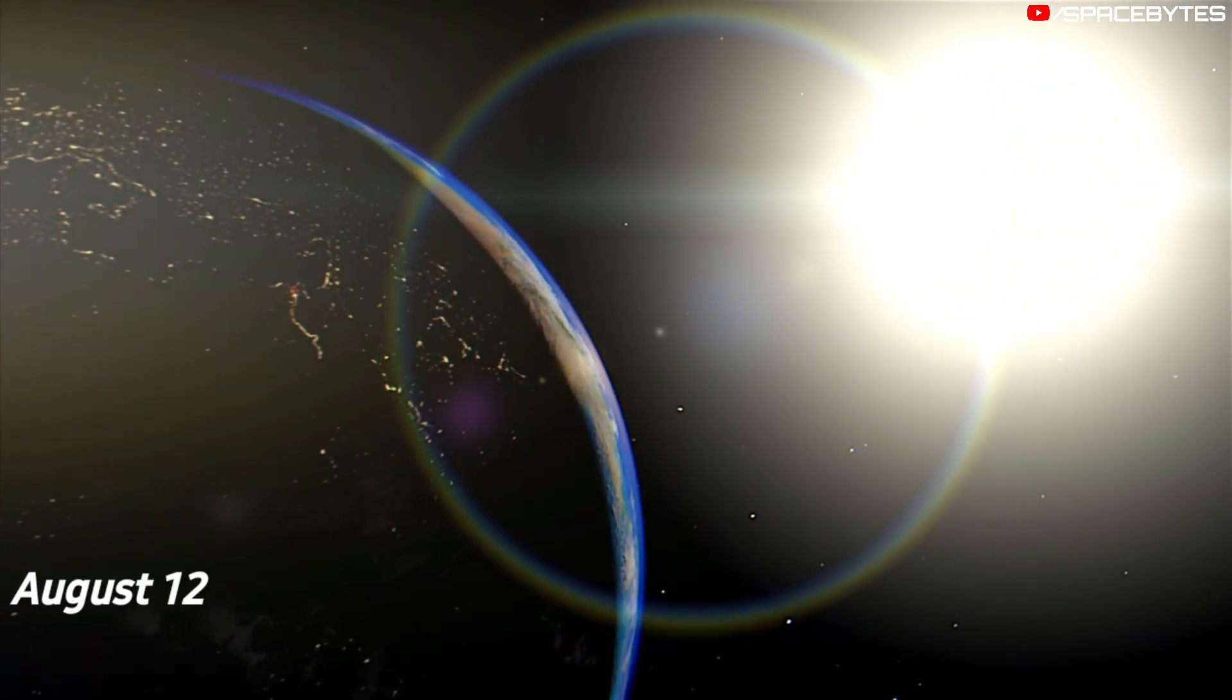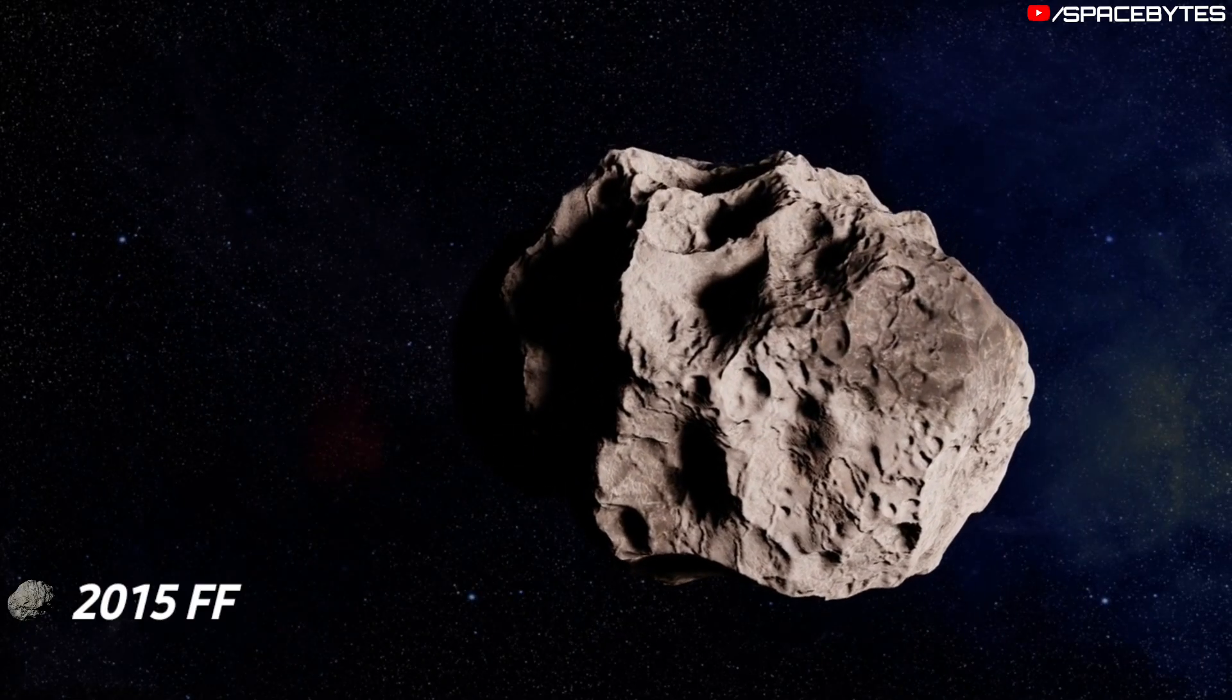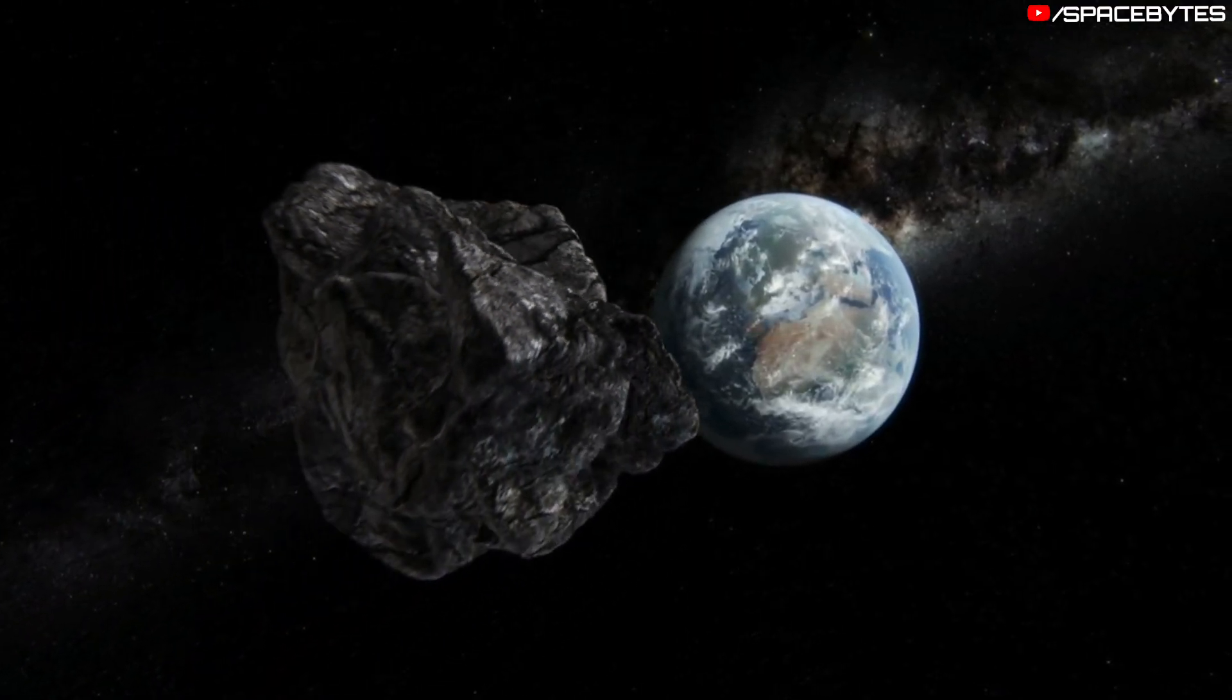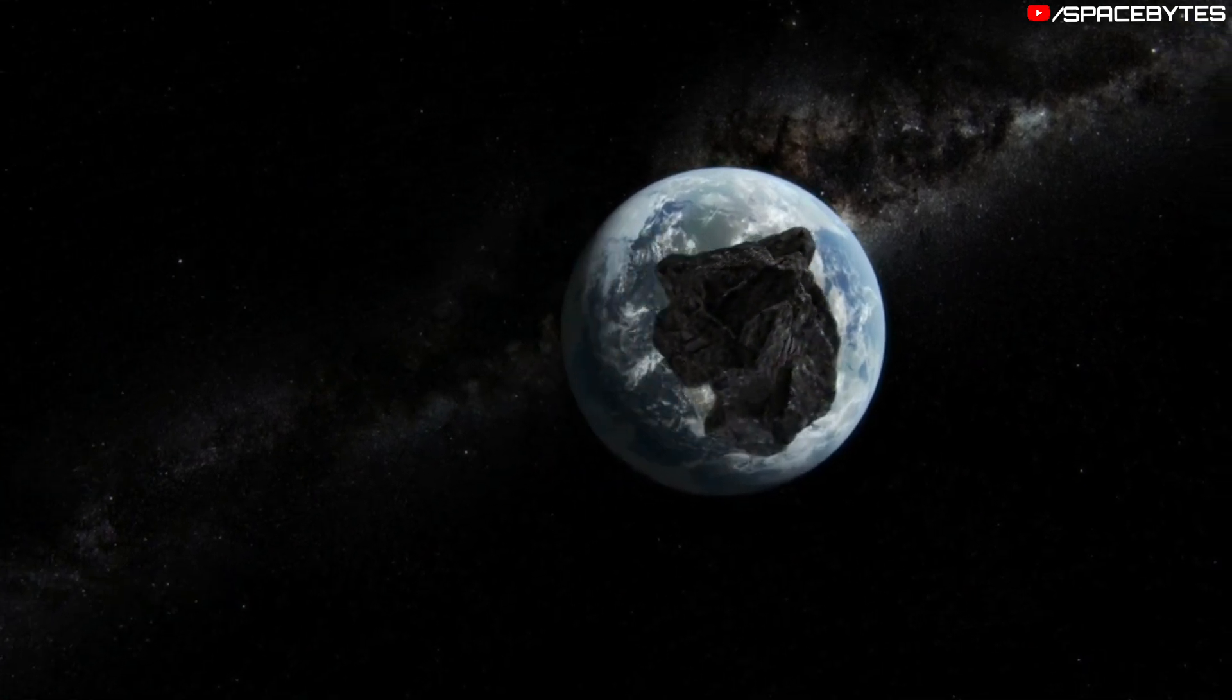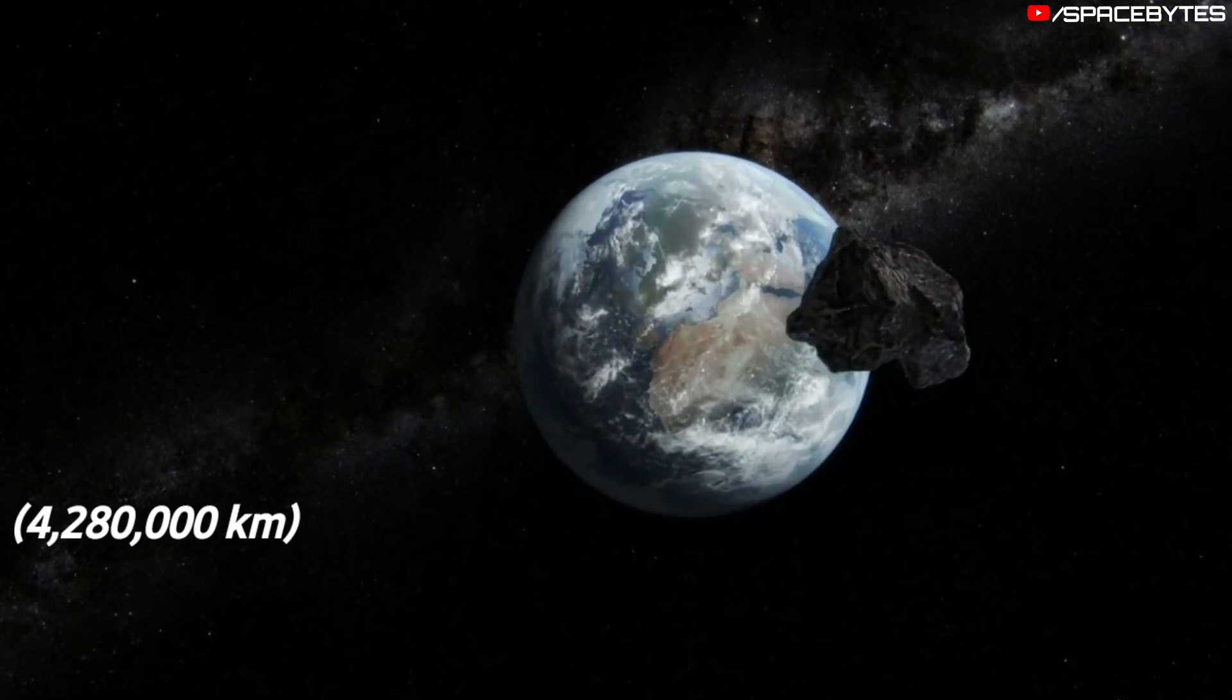On August 12, asteroid 2015 FF-NEO will be passing our planet Earth. At its closest, the asteroid 2015 FF will be at 4,280,000 kilometers from Earth at a speed of 9 kilometers per second.